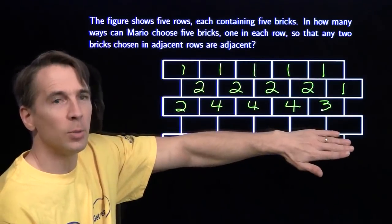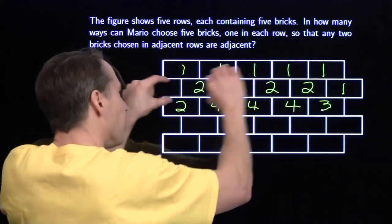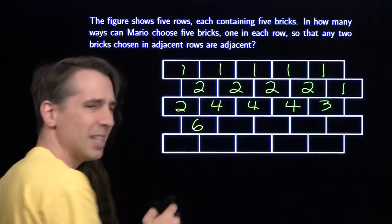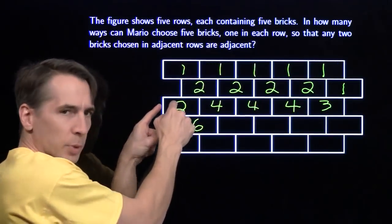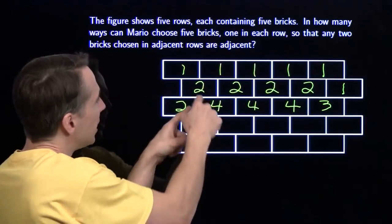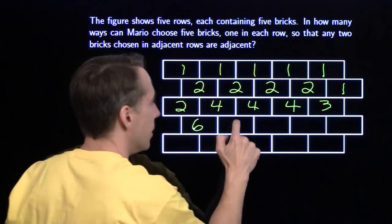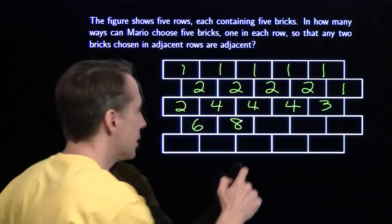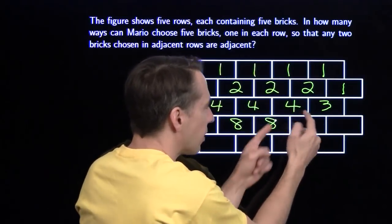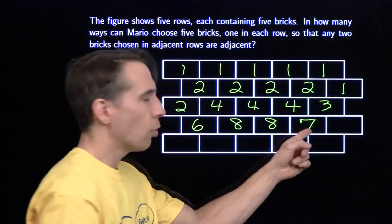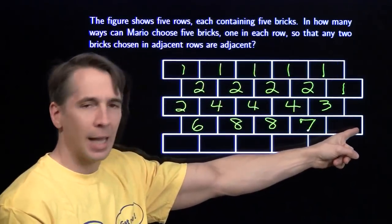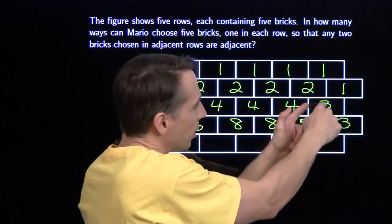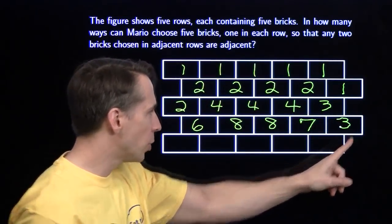So let's move down to row four. See, all we're doing here is thinking about what happens: start from the first row, build to the second, build to the third — we're creating that path for Mario. The number of ways he can get to this brick is six, because he can go through this brick two ways plus four more. Same drill: four plus four gives us eight. Four plus three gives us seven. This last brick, the only way Mario can get there is by going any one of the three paths, so there's only three ways to get there.